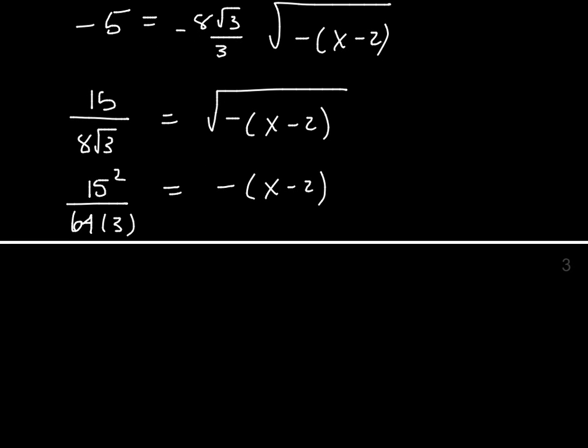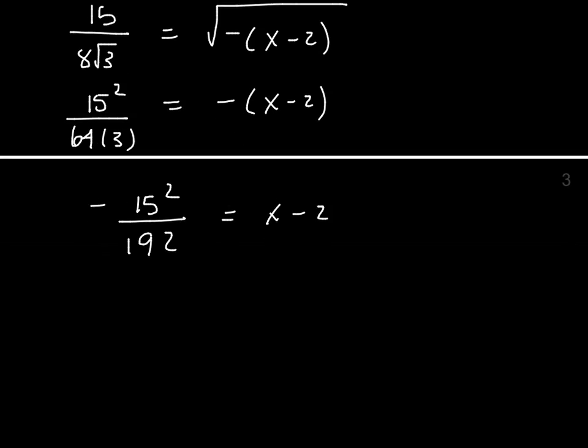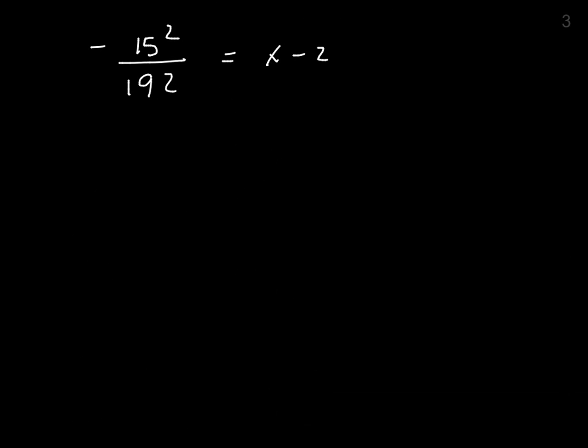Now you divide both sides by negative, it becomes negative 15² over 64 times 3 is 192, and then I have x minus 2 on this side. Bring the 2 to the other side, and I get x equals 2 minus 15² over 192. And whatever you get on the calculator, that's going to be your zero. So we found the zero.